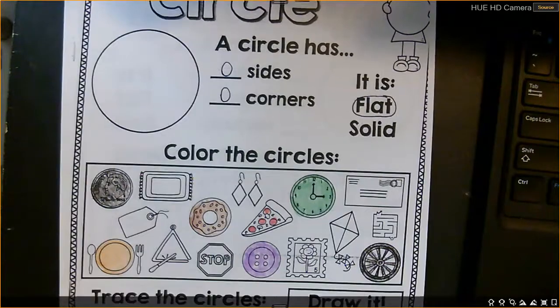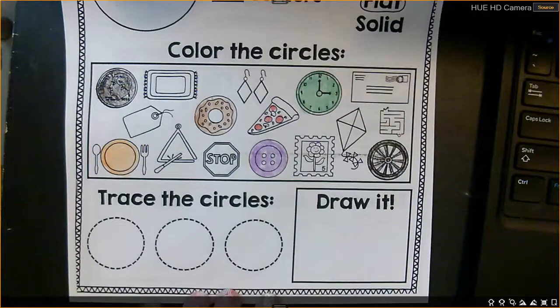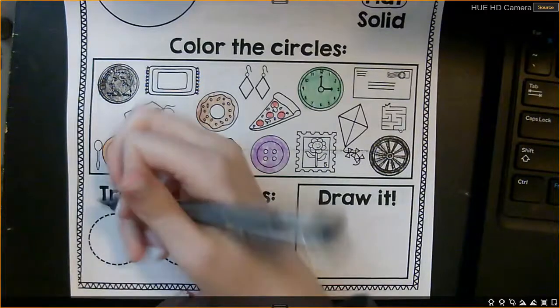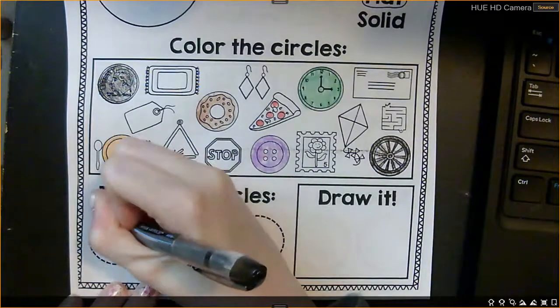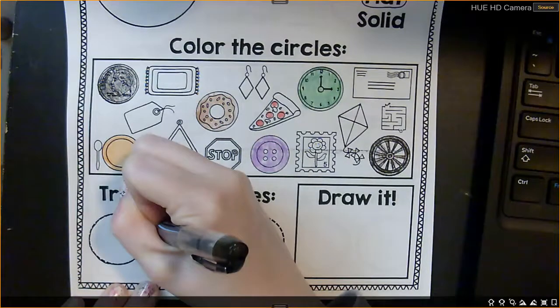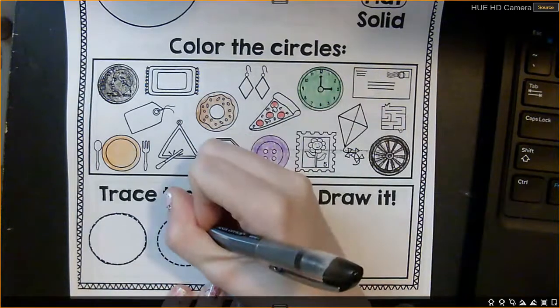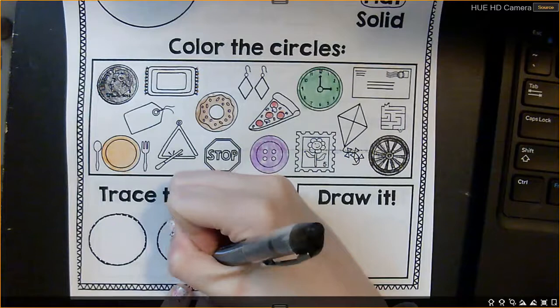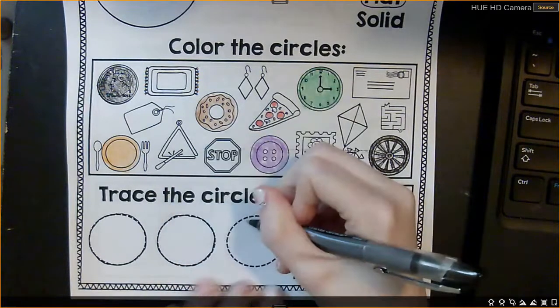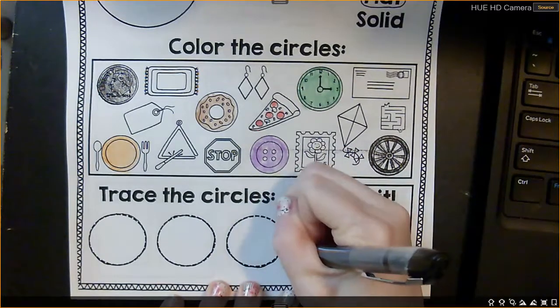And now we are going to come down just a tiny bit. And we are going to use our pencil. And we are going to trace the circles. So we are going to start right here and we are going to go around and trace the circle. And we are going to trace the circle carefully. We are practicing drawing a circle because circles are kind of hard because you can't have any lumps. They have to be perfectly round.